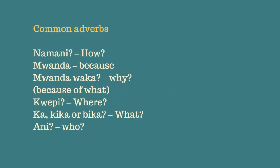The first one is namanyi. Namanyi means how. The second one is mwanda. Mwanda means because. The following is mwanda waka, which means why. Mwanda waka literally translates to 'because of what.' Mwanda waka means why.